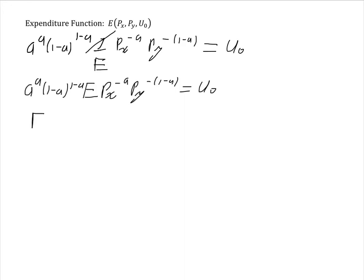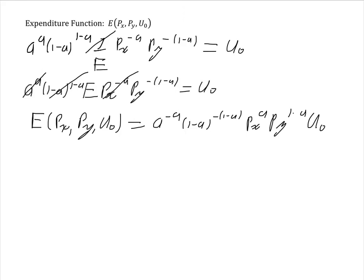To obtain the expenditure function E as a function of prices and the desired utility level, I solve for E by moving all other terms to the right. I divide both sides by a^a, then by (1-a)^(-(1-a)). Dividing by Px^(-a) gives Px^a, and similarly Py^(1-a), along with U₀. Basically, I'm isolating E on the left-hand side.